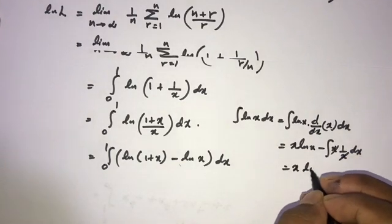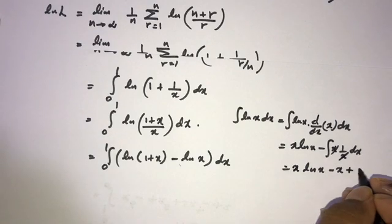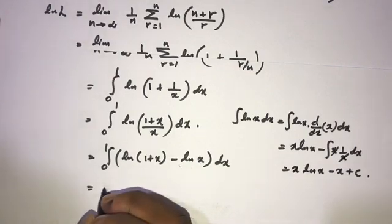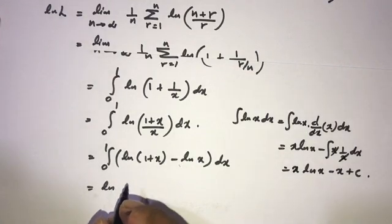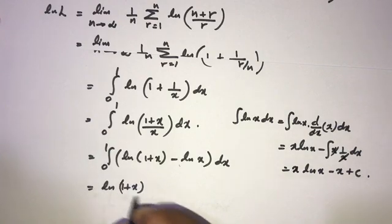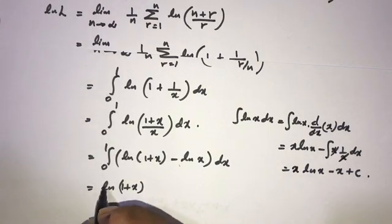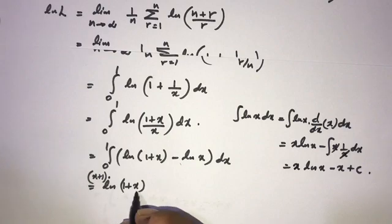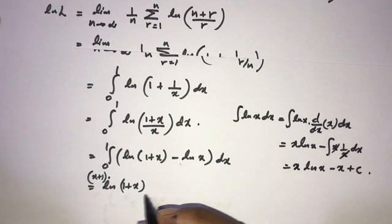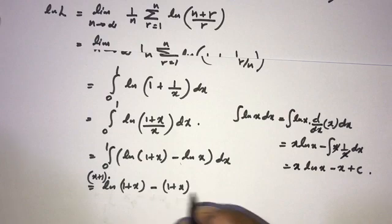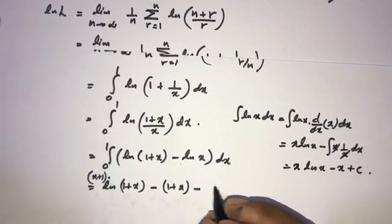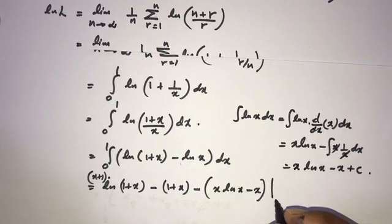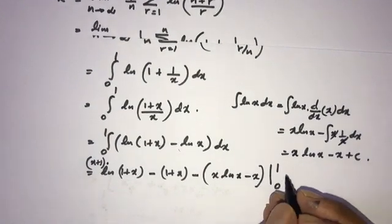So the antiderivative is x times natural log of x minus x plus C. Applying this, we write x plus 1 times natural log of 1 plus x minus (1 plus x), minus x times natural log of x minus x, evaluated from 0 to 1.